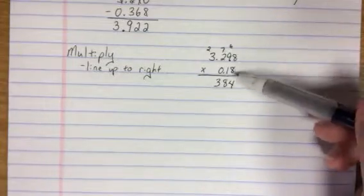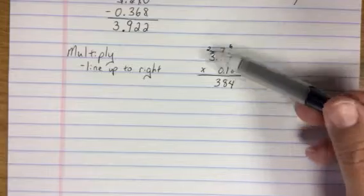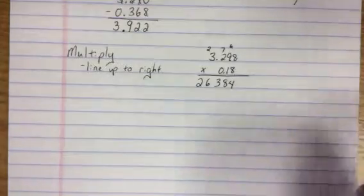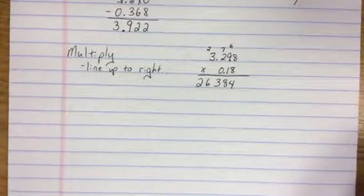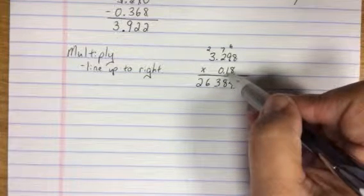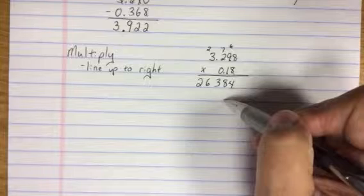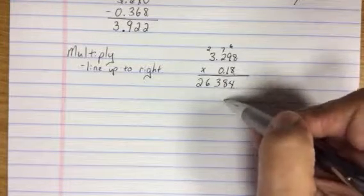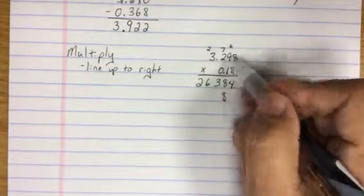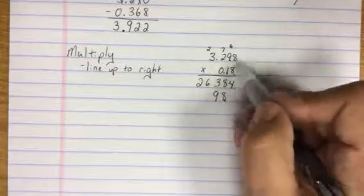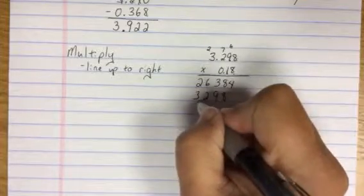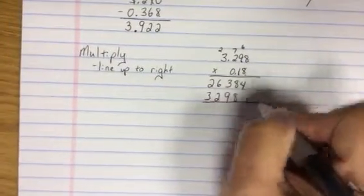I carry the 2. 8 times 3 is 24. Plus 2 is 26. I write 26. If you've not noticed, right now I'm ignoring any decimal. I started straight below with the 8. I'm moving over to the 1. I start straight below. 1 times 8 is 8. 1 times 9 is 9. 1 times 2 is 2. 1 times 3 is 3. Still ignoring the decimals.